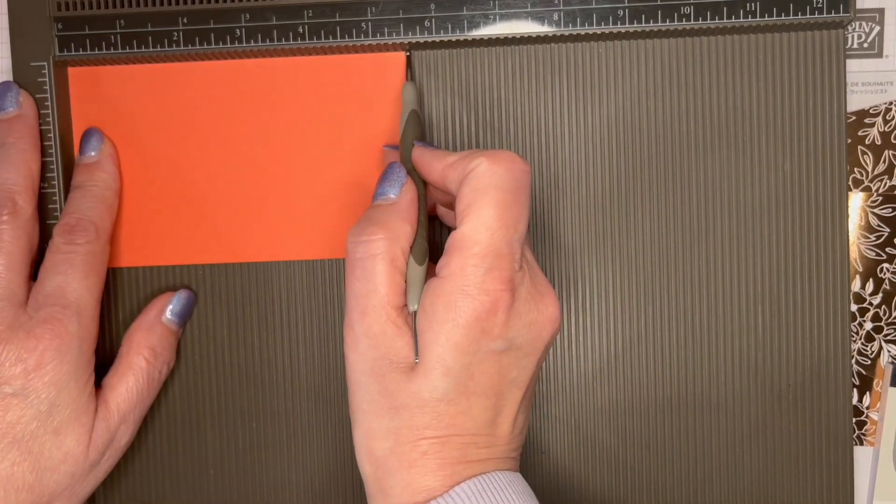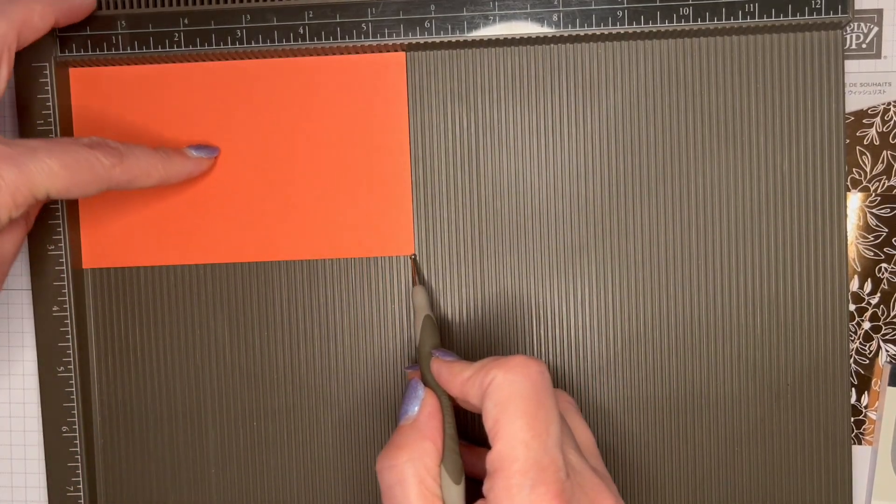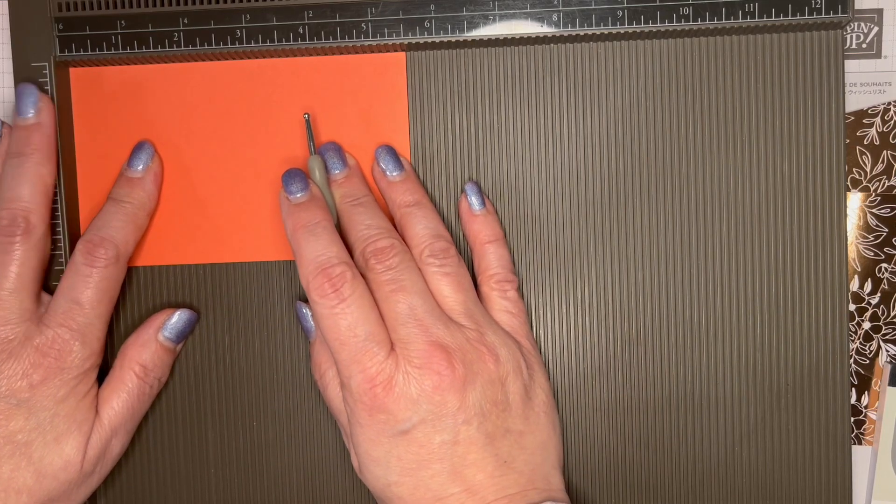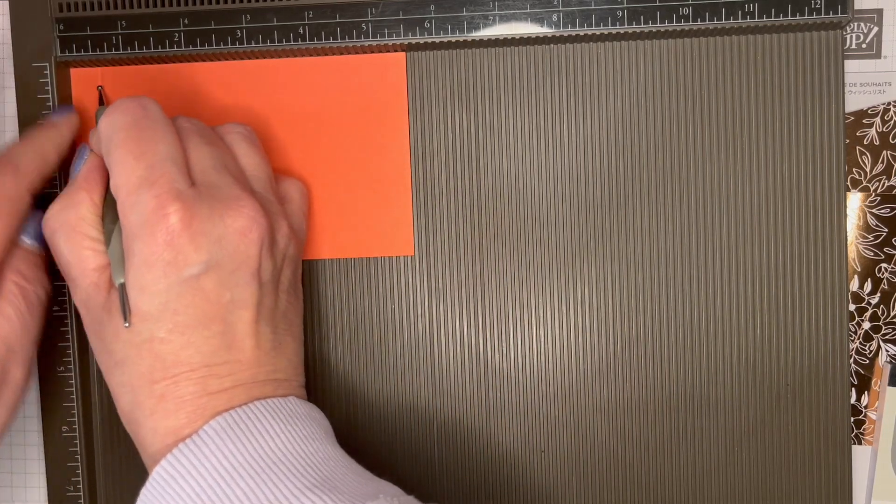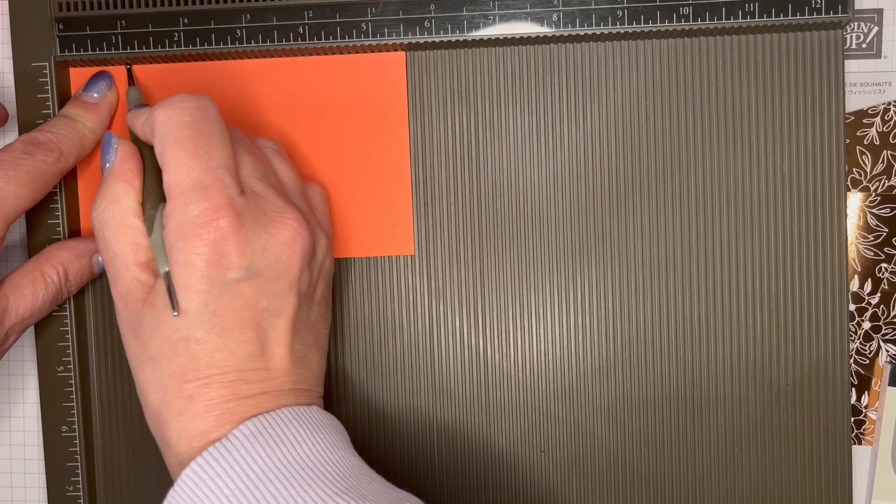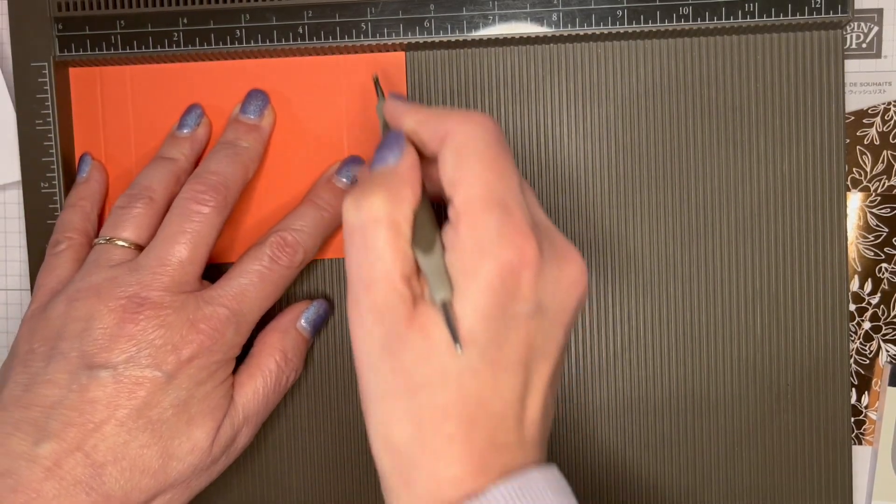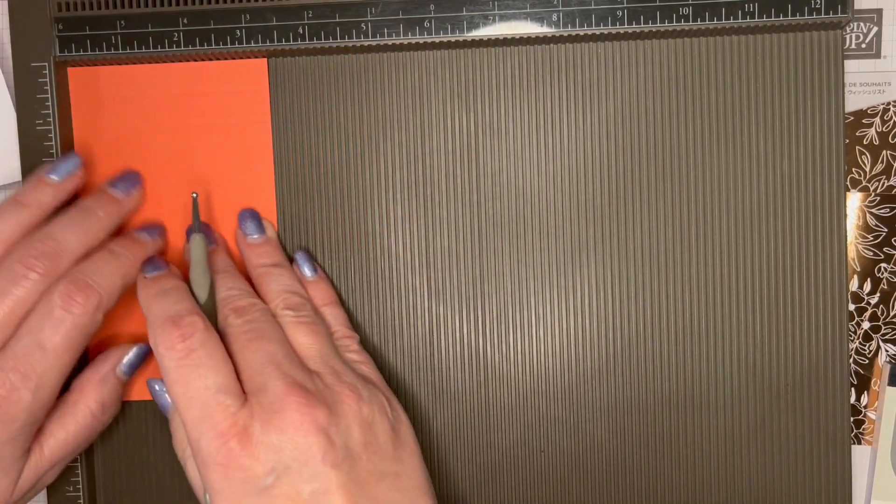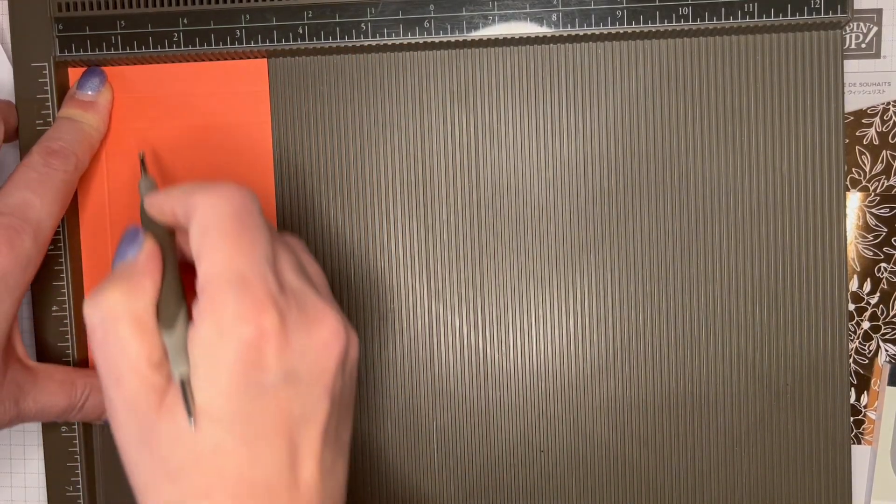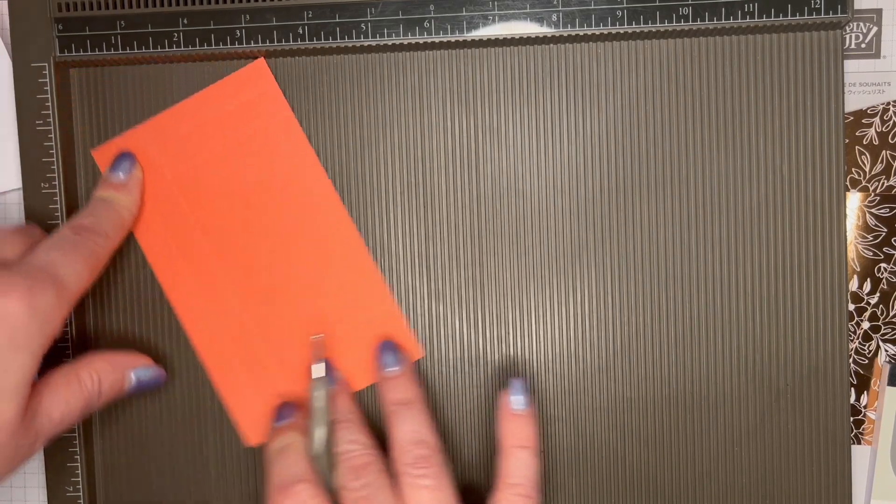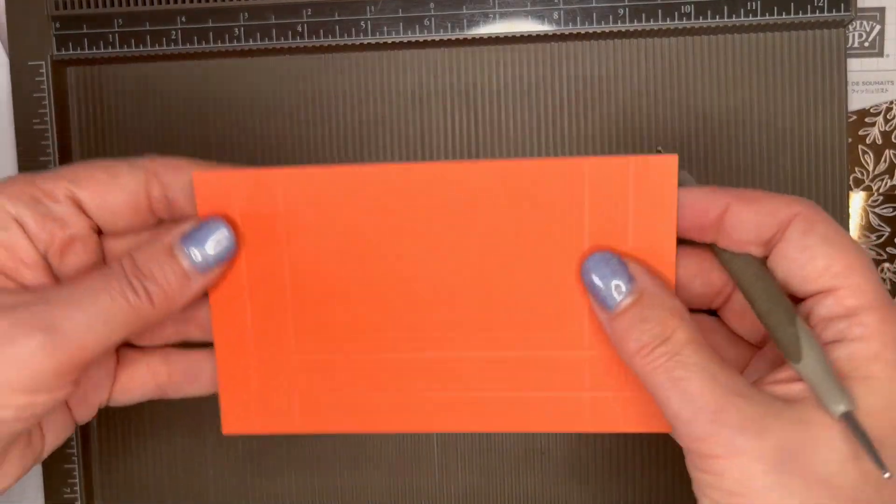With this piece of card, it is five and a half by three and a quarter. And on the long side, I want to score that at half an inch, one inch, four and a half inch, and five inch, and then half inch and one inch on the short side.